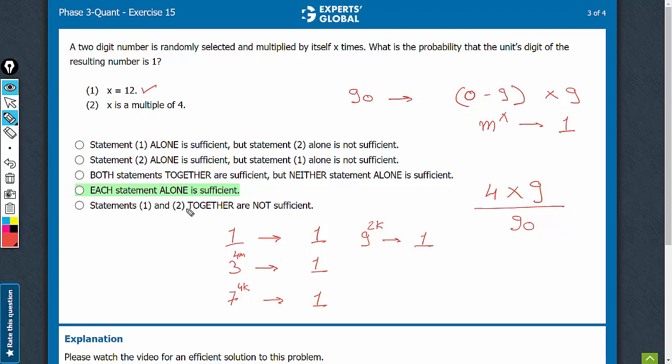Statement 2: same logic, it's not about 12. We just saw 4m, 4k, 1 raised to power anything, 9 raised to power 2k. If it is a multiple of 4, it is, of course, a multiple of 2. So we will end up with the same value here. Statement 2 is also sufficient. The right answer is option D.